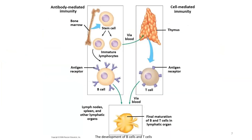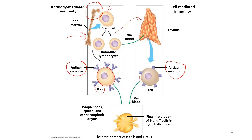Shown here is a figure of the development and maturation of both lymphocytes — B cells and T cells. Both B cells and T cells are produced from stem cells in the bone marrow. For B cells, they maintain their maturation in the bone marrow. However, T cells move from the bone marrow towards the thymus gland for maturation. After maturation, both lymphocytes develop a particular protein on the surface of their cell membrane known as the antigen receptor. For B cells, this is the B cell receptor, and for T cells, it is the T cell receptor.